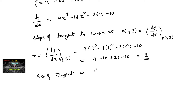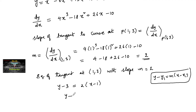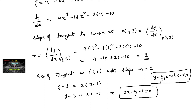The equation of the tangent at (1, 3) with slope m = 2 is: y - y₁ = m(x - x₁), giving y - 3 = 2(x - 1), or 2x - y - 2 + 3 = 0. So the equation of the tangent is 2x - y + 1 = 0.